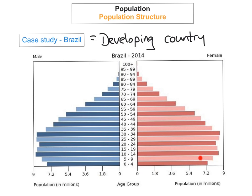The high birth rate in Brazil is due to a number of factors such as lack of family planning, the traditional role and status of women, and the fact that children work from a very early age — families have lots of children to send them out to earn money. There's also a higher rate of infant mortality. Looking at the top of the pyramid, you can see a very narrow peak, which tells us that death rates are high. This is due to poor living standards, lack of clean water, poor medical services, and lack of good food and education.